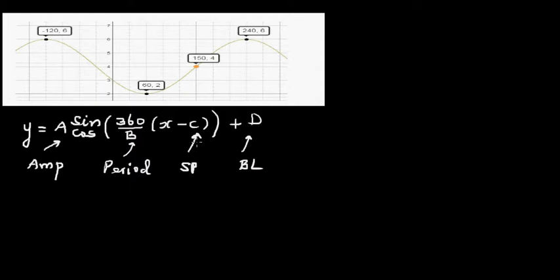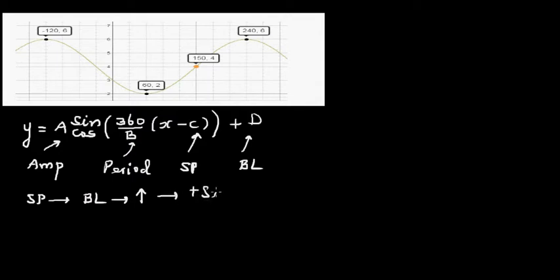From the starting point you can decide whether it's a sine or cosine graph. If the starting point is at the baseline and the graph is going up, then it is a positive sine graph. If the starting point is at the baseline and the graph is going down, it is a negative sine graph.